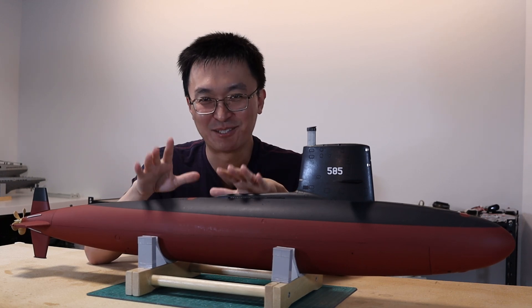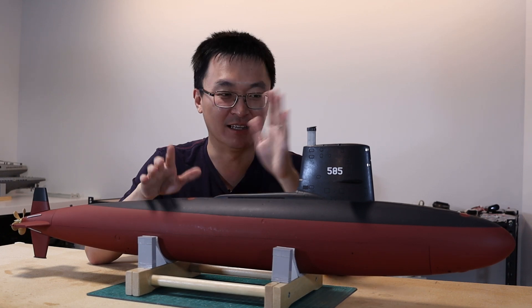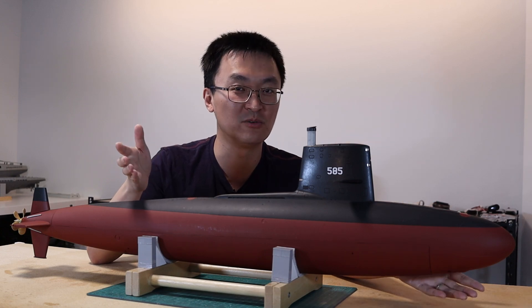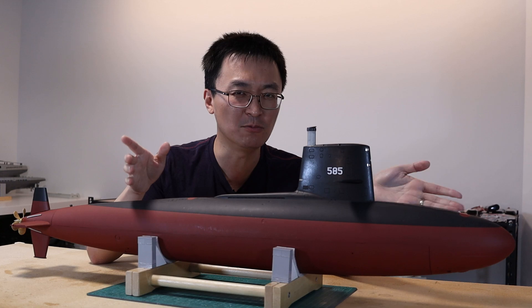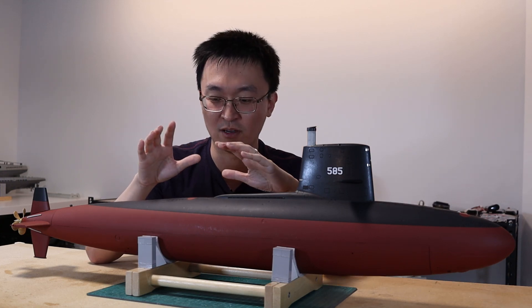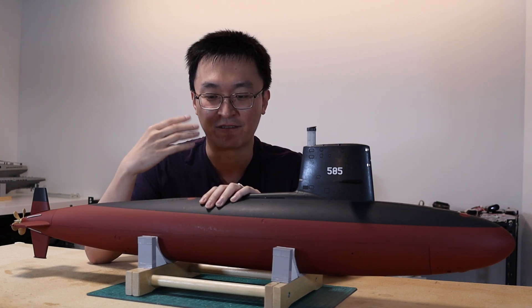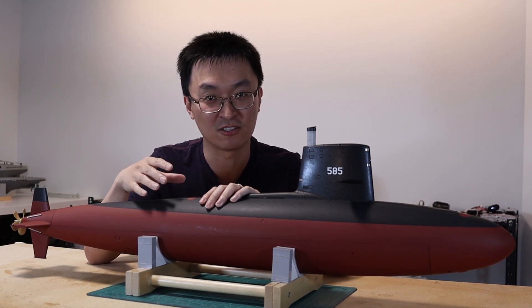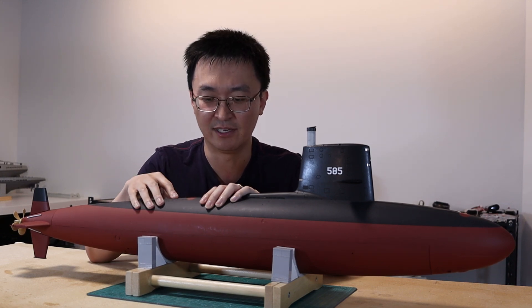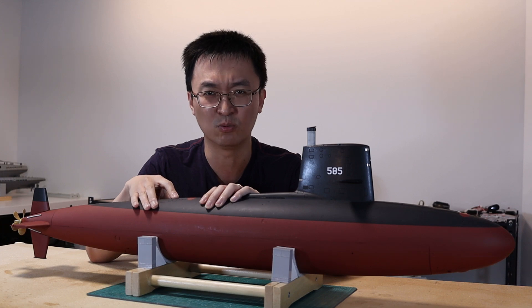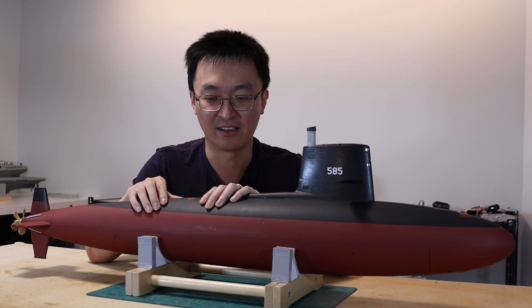Well today's the day because this is my 1/72nd scale USS Skipjack. It's a model of an American nuclear submarine from the Cold War, made by a company called Mobius. This was originally a static display model that I've converted into a fully functional RC submarine. I believe the actual plastic kit was released all the way back in 2012.